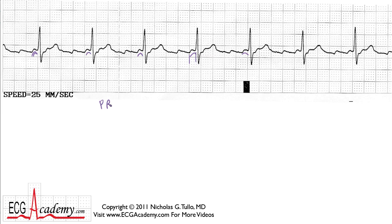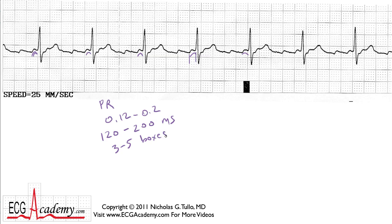What's the normal PR interval? The normal PR should be 0.12 to 0.2 seconds — or, as electrophysiologists like to think in terms of milliseconds, 120 to 200 milliseconds. For beginners, it's basically anywhere from three to five small boxes, and that would be the normal PR interval. This really does look short — it's almost like two and a half small boxes. It doesn't quite make three.